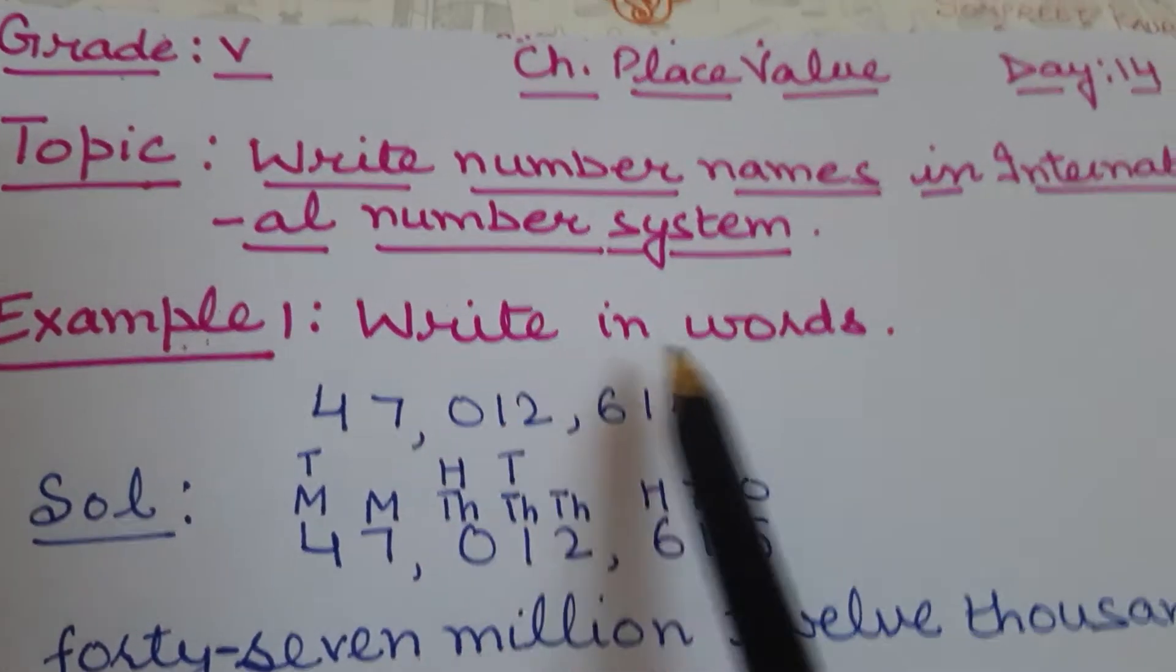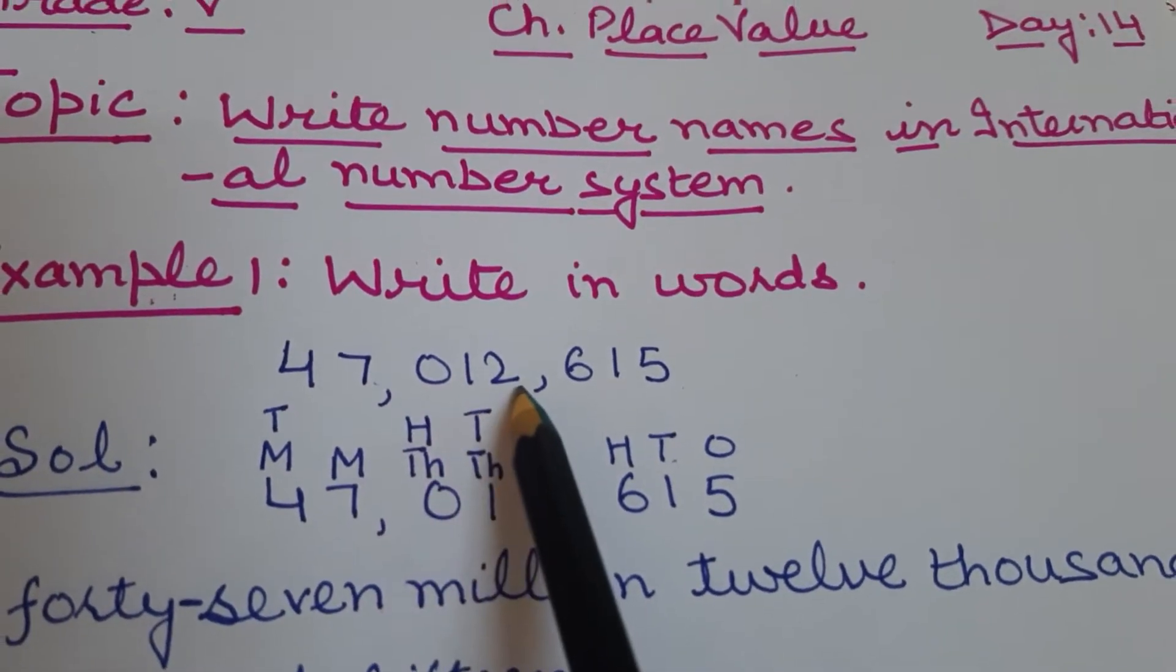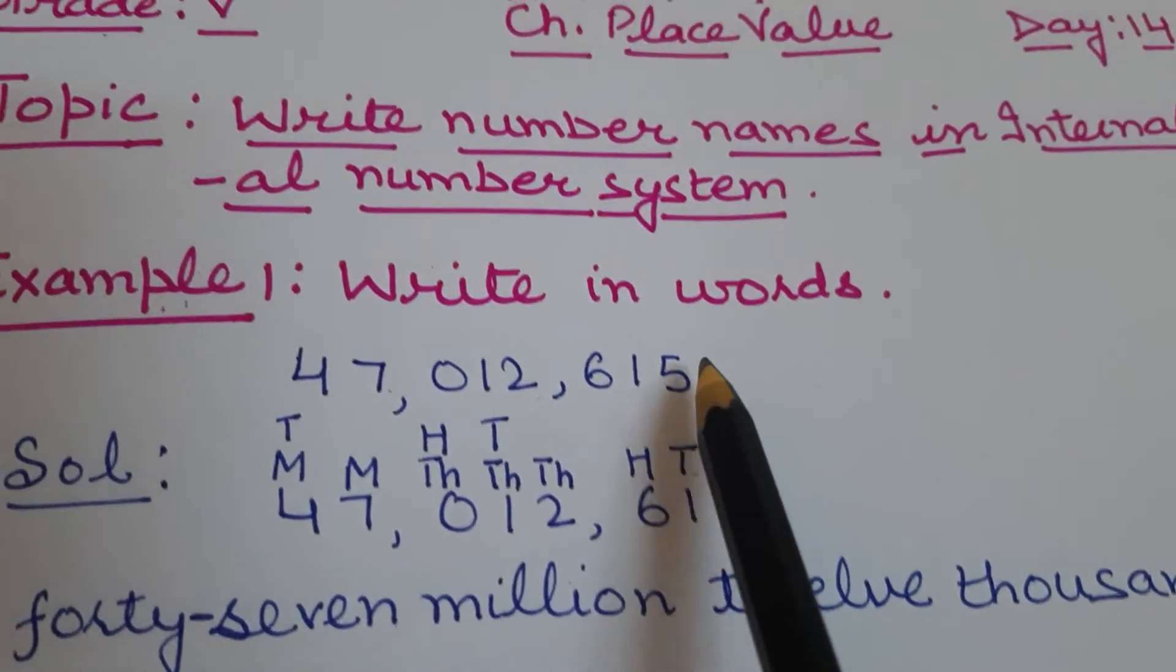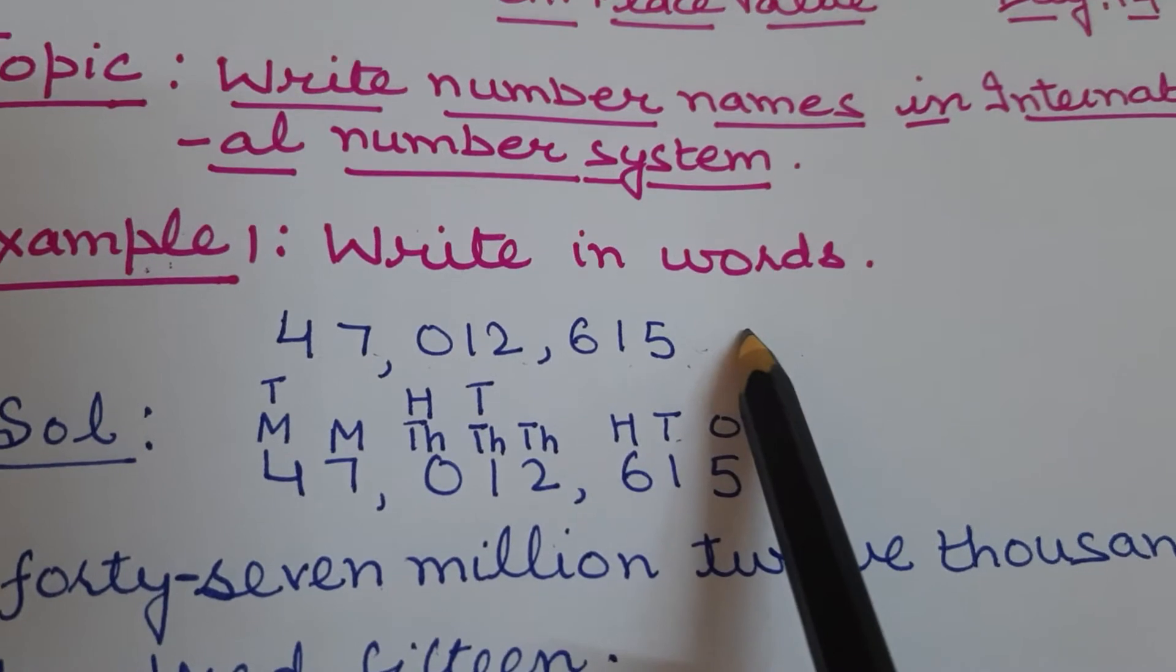First example I am taking 47,012,615. I am reading it as because we don't know its name.